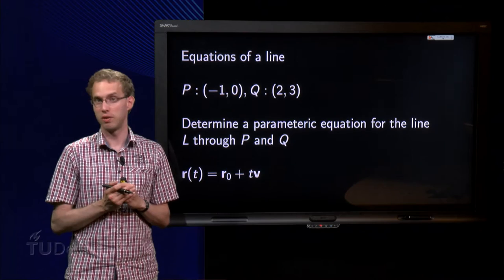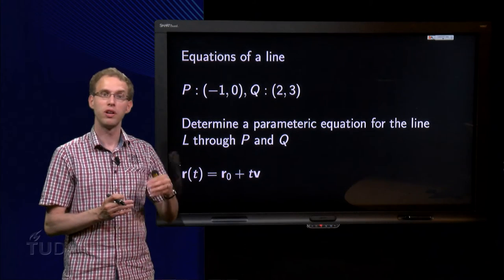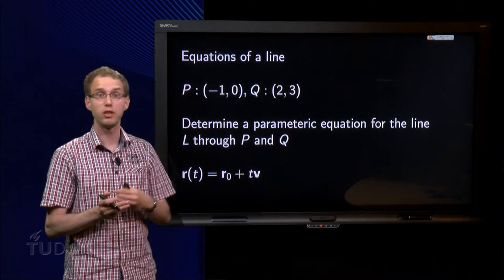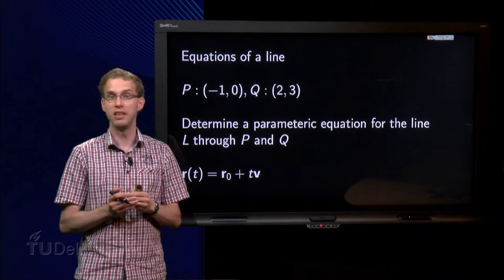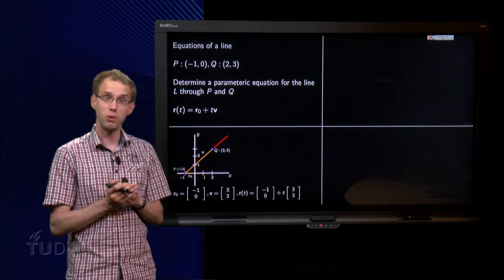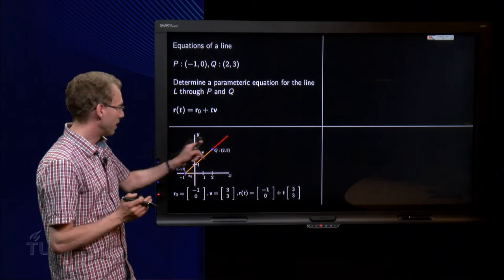Well, we know this equation should be r(t) equals r0, where r0 is a vector from the origin to any point on the line, plus t times v, where v is a vector in the direction of the line. So how does it look in the picture? Here we have p, there we have q.